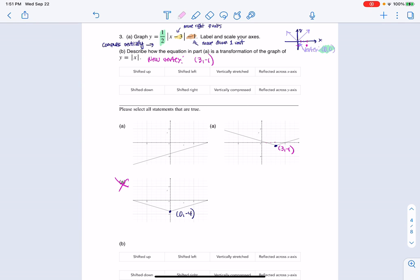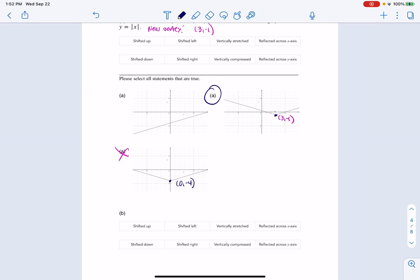And again, let me just stay consistent with the colors I'm using, so there is my answer. And then at this point, for part B, let's just label in all of our transformations. So what I did here, I would circle that I shifted right.